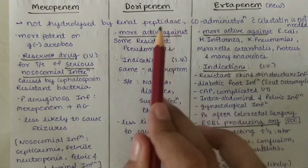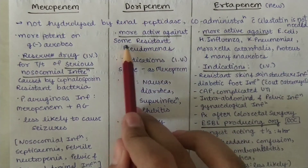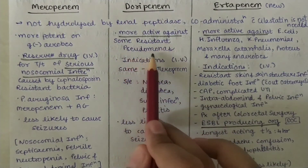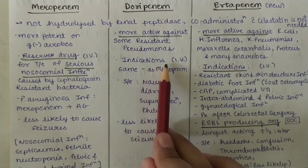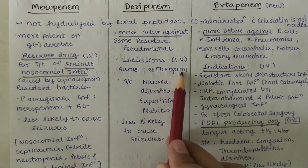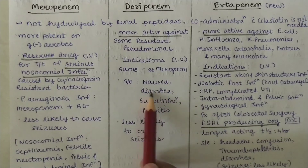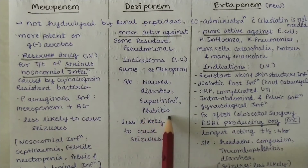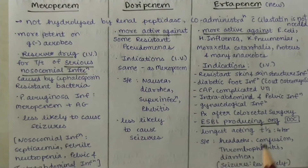Next, Doripenem. It is more active against some resistant Pseudomonas. Indications are the same as Meropenem. Side effects: nausea, diarrhea, superinfection, and phlebitis. It is also less likely to cause seizures.